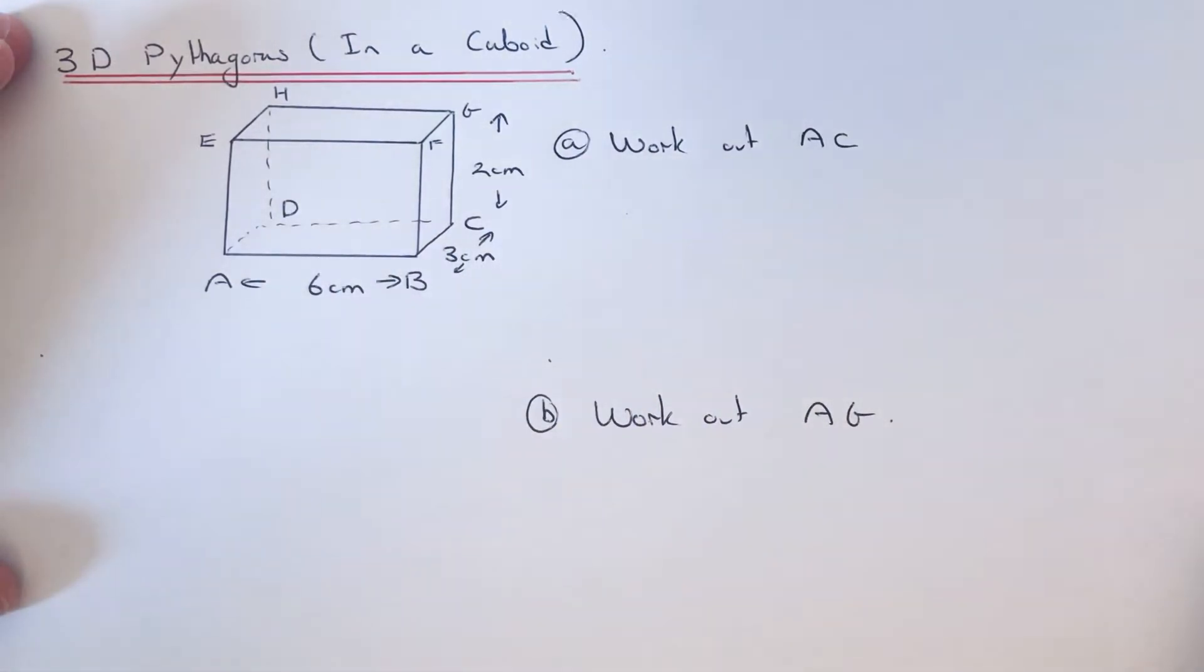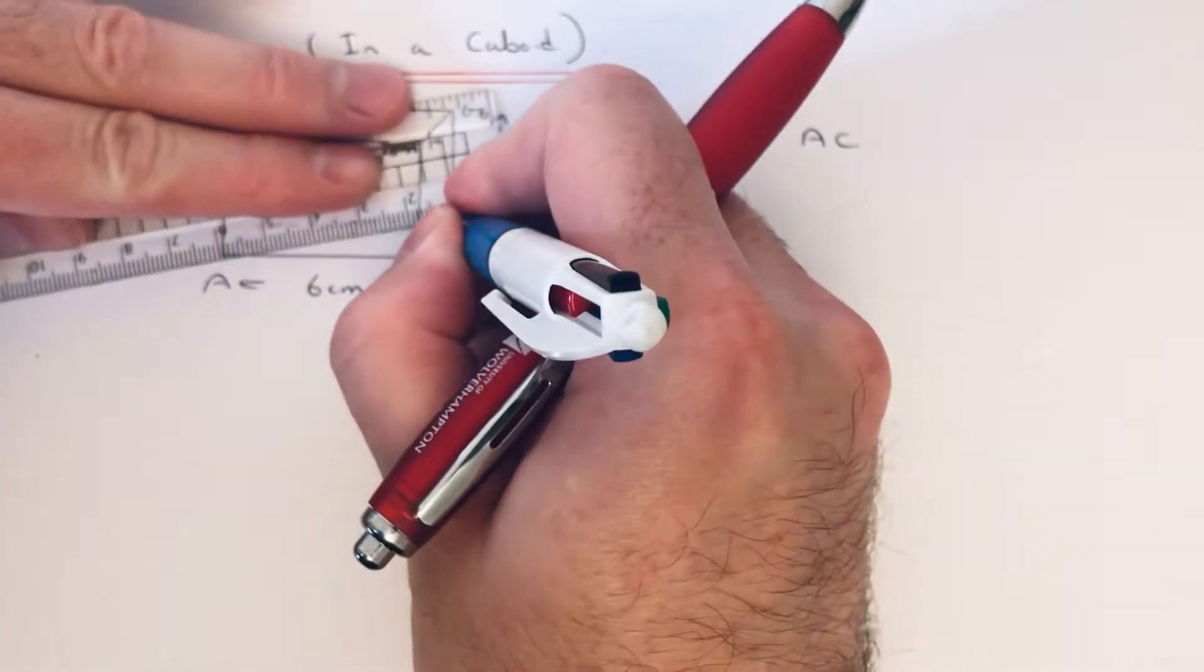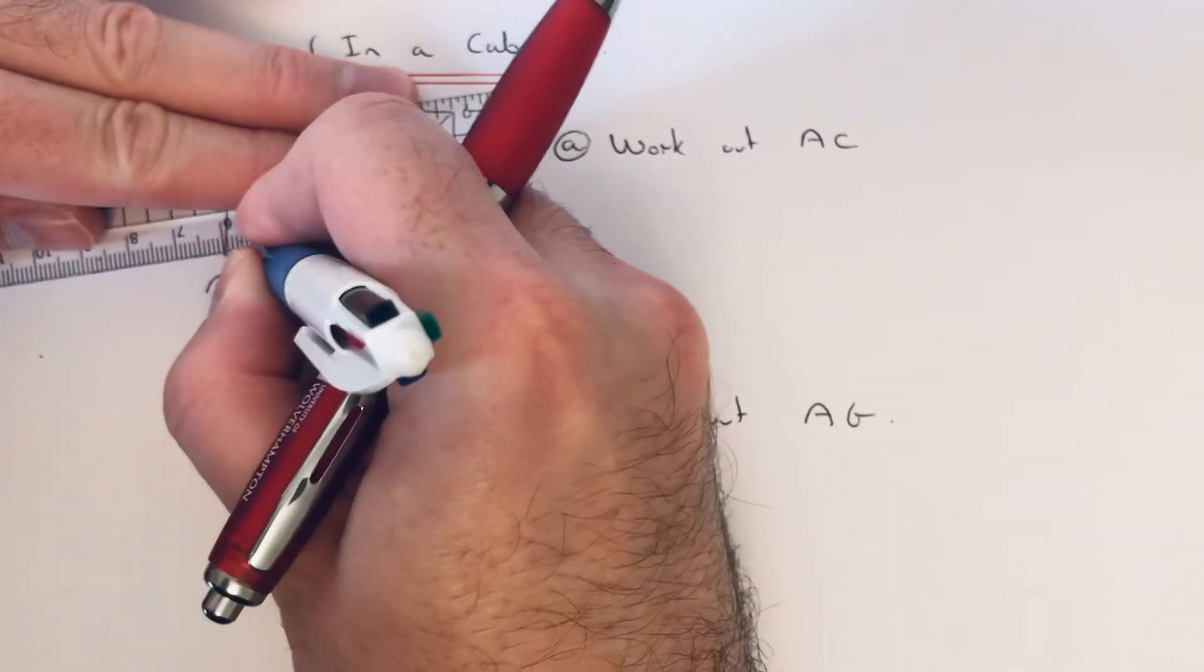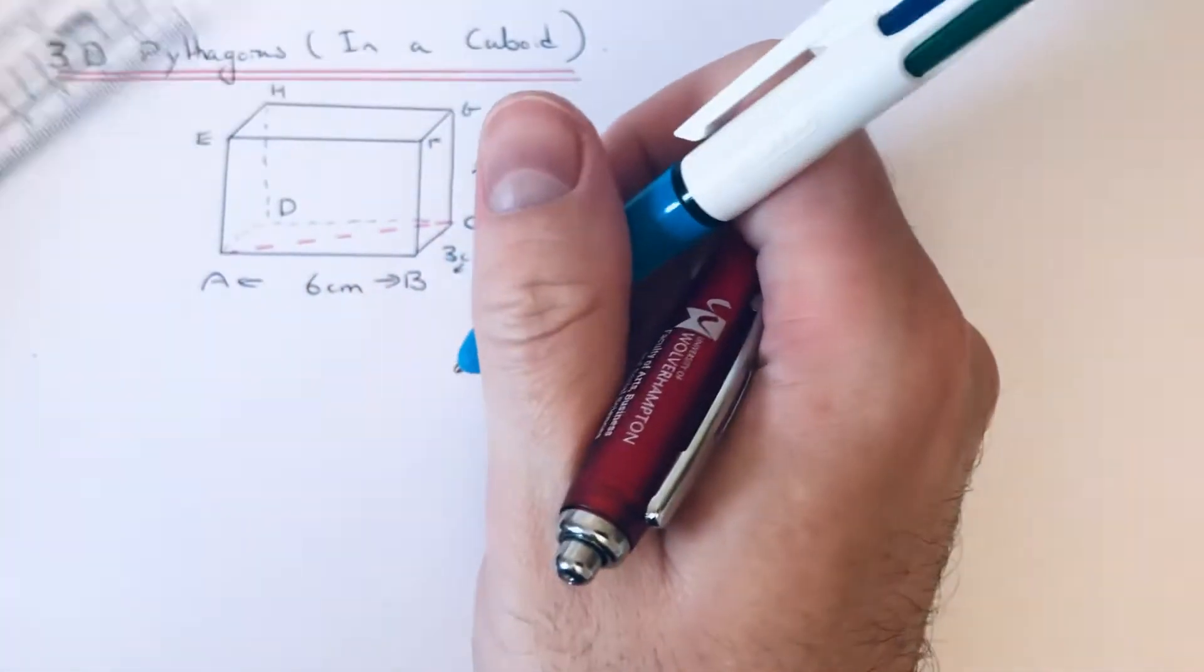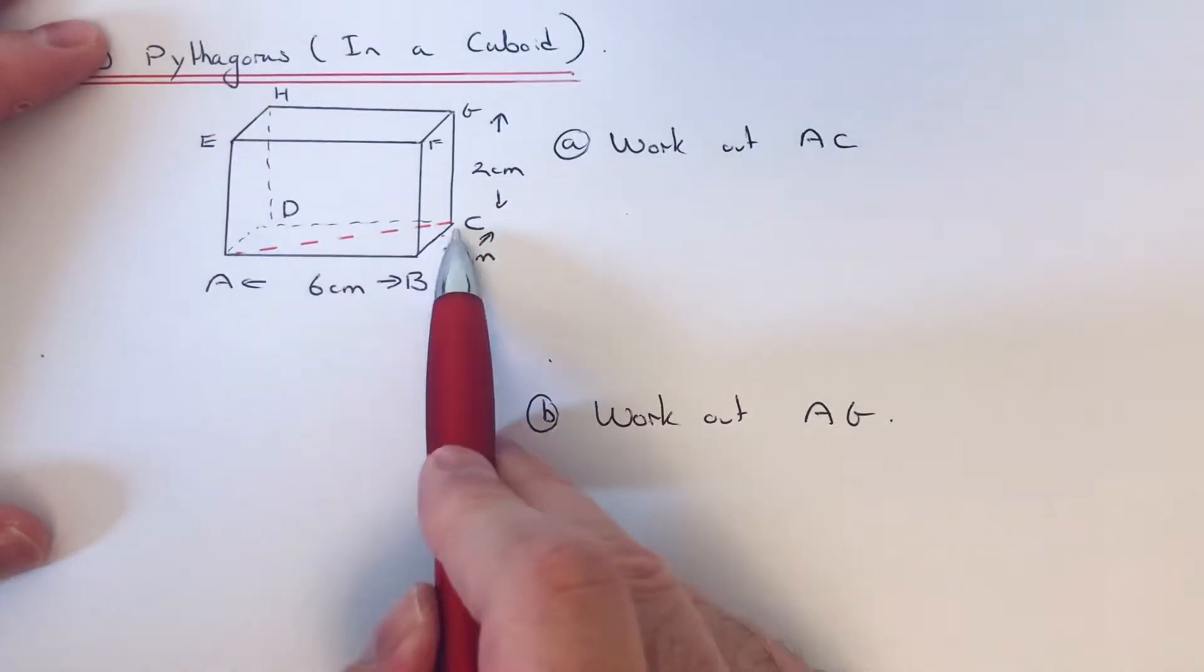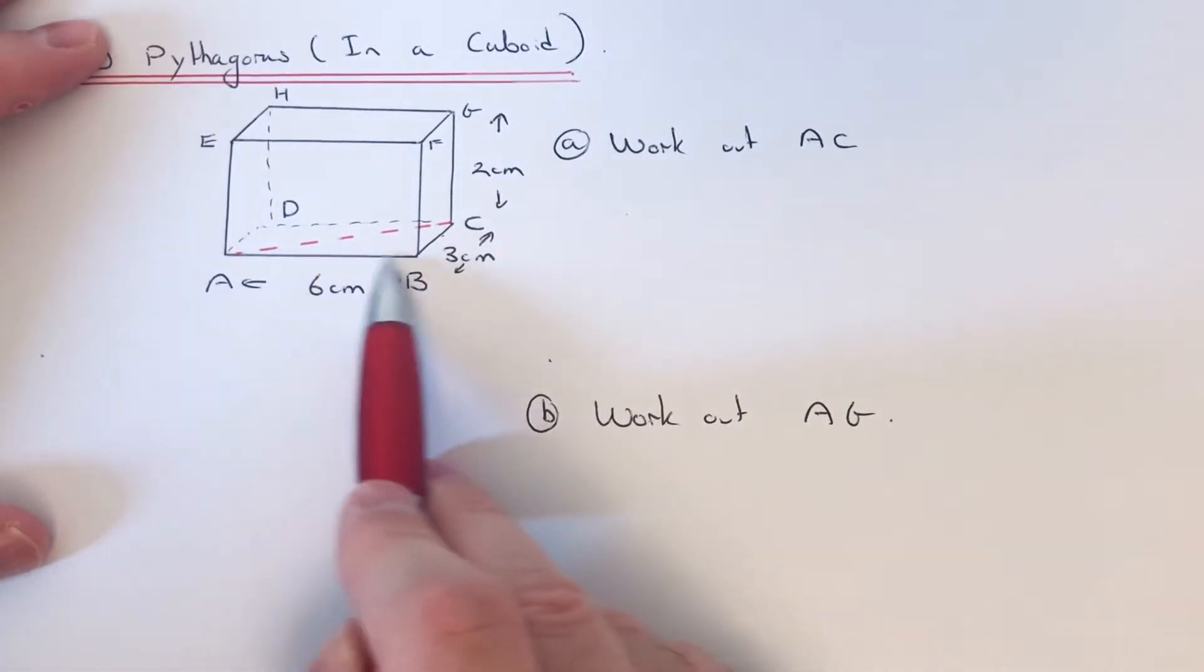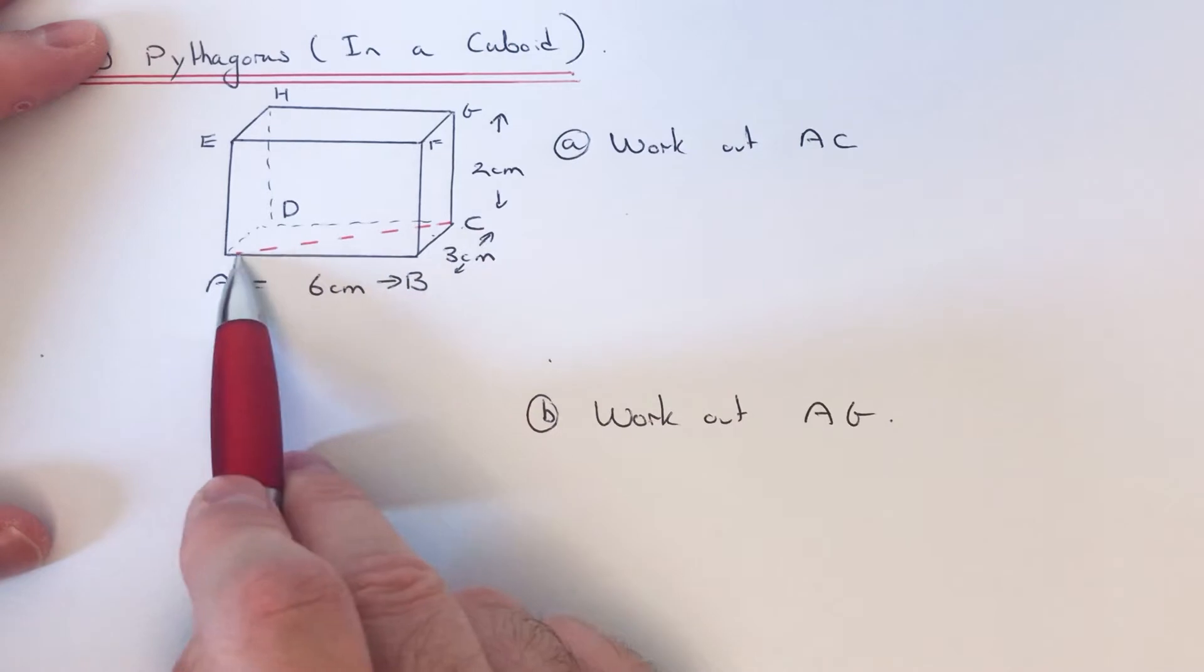So I'm just going to mark that one in the diagram. A to C is this line here. The right-angle triangle I'm going to use to work out A to C is going to be ABC, so it's this right-angle triangle on the bottom.